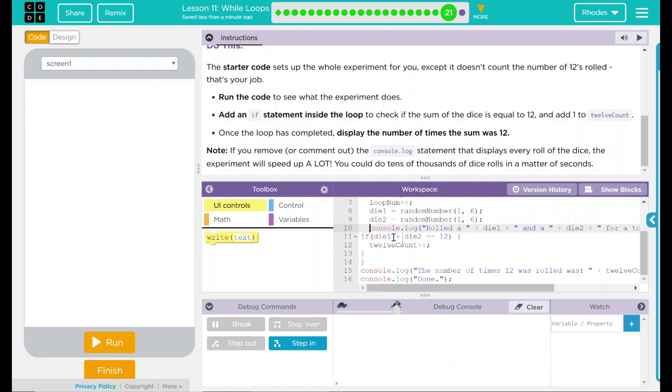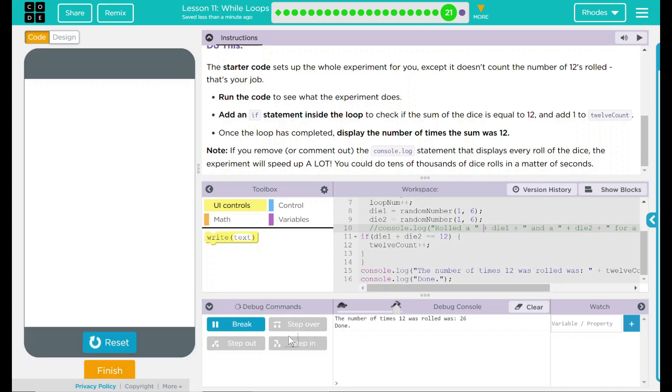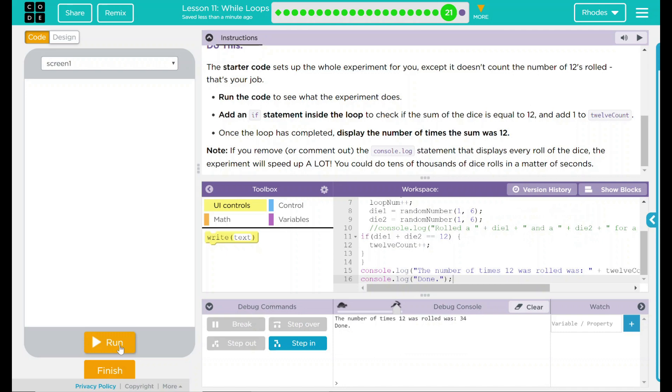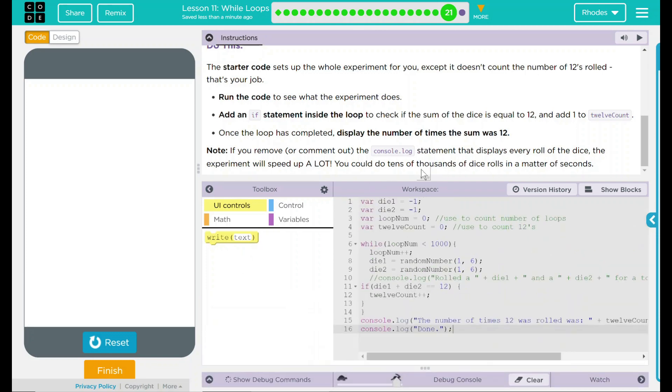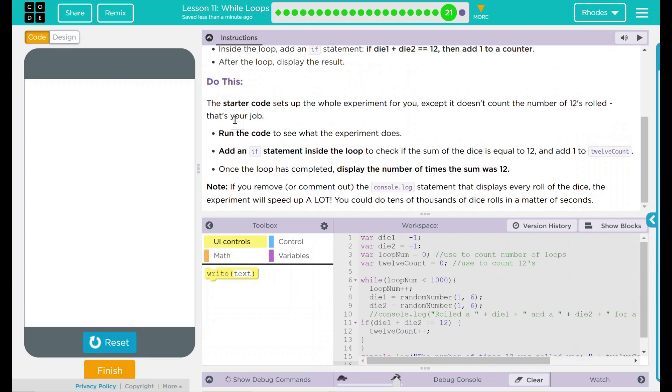As you can see, if we do not comment it out, it takes forever and bogs us down because it's printing out each one of these statements a thousand times. And that's a lot. We just hit run. We just get the ending part outside the loop. And this time, 12 was rolled 26 times. As you can notice, it's pretty consistent in the high 20s, low 30s every time. Pretty interesting.